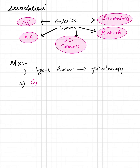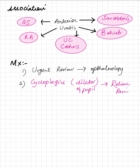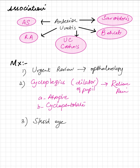Management of anterior uveitis involves: number one, urgent review by an ophthalmologist; and number two, a combination of cycloplegics — mydriatic drops — which help by dilating the pupil, further helping to relieve pain and photophobia. These include atropine and cyclopentolate, and can be given along with steroid eye drops.